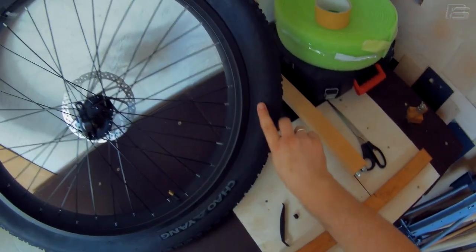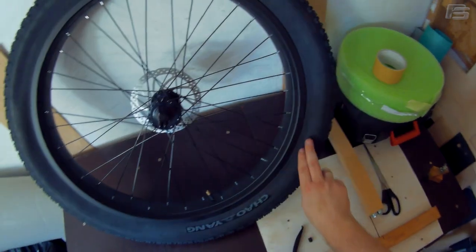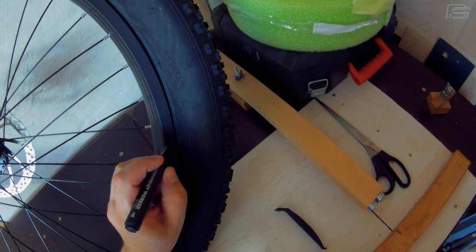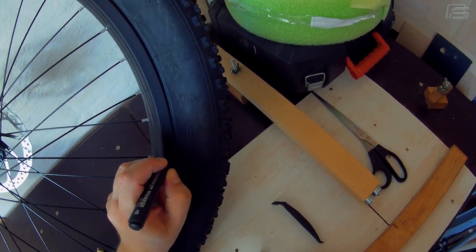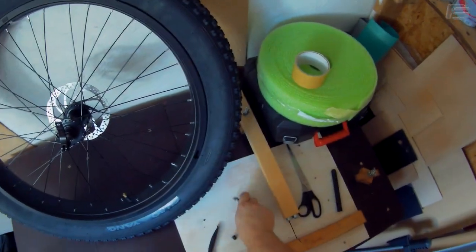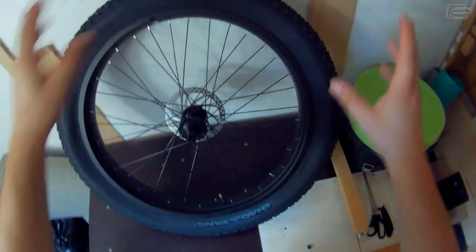And the thing that I like to do here is to find this arrow that shows the direction of the rotation of the tire and to mark the same arrow on the rim so that I don't have to search much when I want to put it back on.